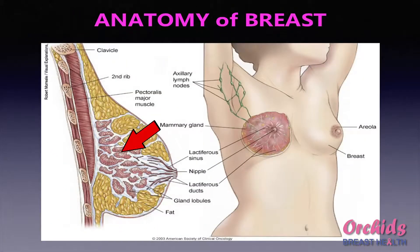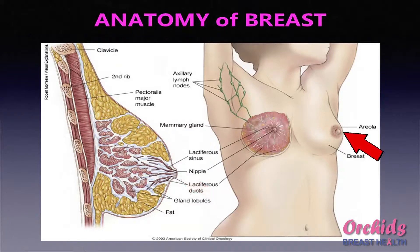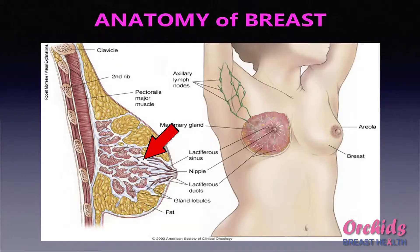To understand breast cancer, first let us understand the anatomy of the breast. As shown in this diagram, the breast consists of glandular tissue, ducts that carry the milk to the nipple, and the areola. It also has fat and fibrous tissue, and these fibrous tissue strands give the rounded shape to the breast gland.